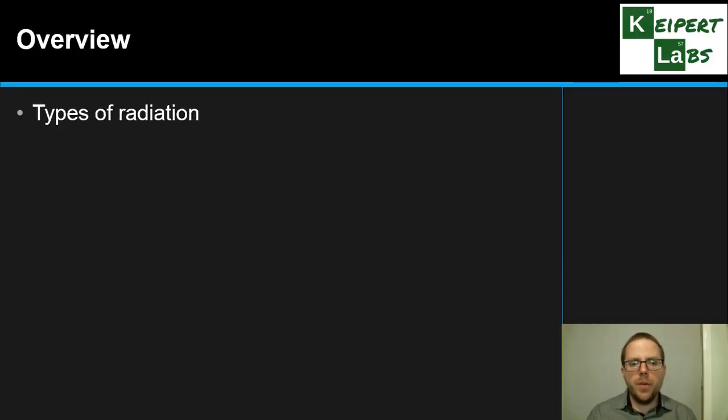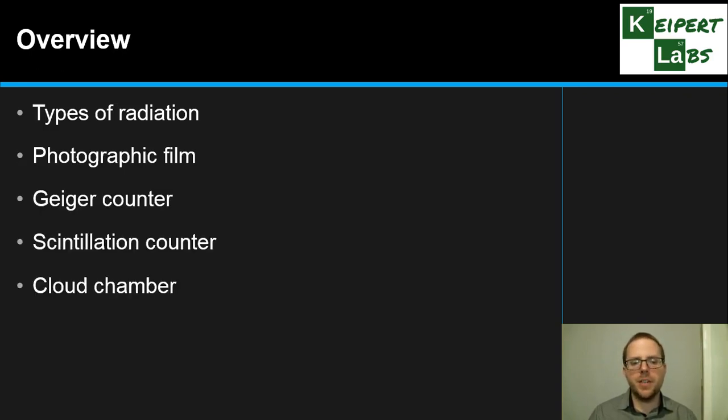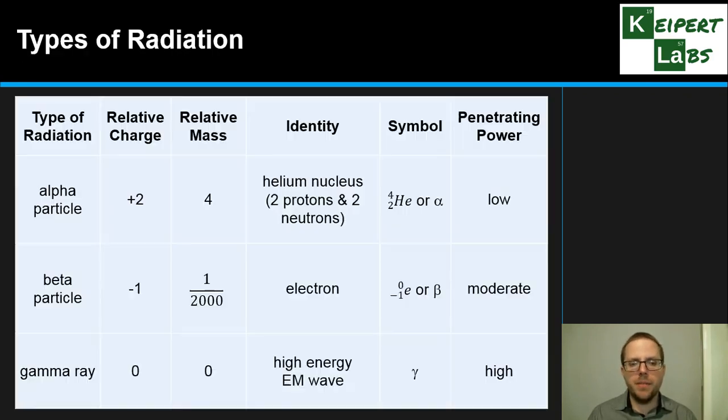We're going to review the different types of radiation that we encounter, and then have a look at some of the different techniques: photographic film, the Geiger counter, scintillation counter, and the cloud chamber as four ways that we as scientists can detect the presence and behavior of different radioactive particles and rays that are given off.